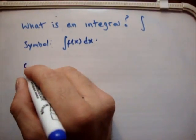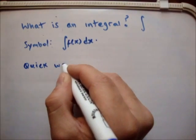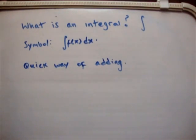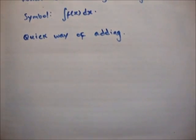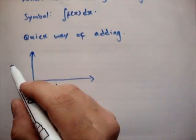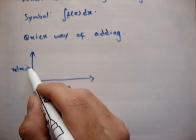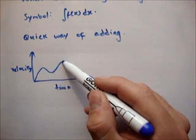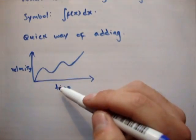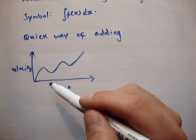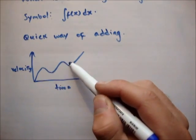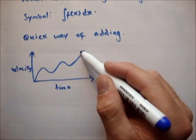An integral is a quick way of adding. For example, let's say we have a graph — anybody doing applied maths might be familiar with this sort of graph. On your graph you might have time and velocity, and say you had a curve that went like that. This is graphing the velocity of your car against time. When you start moving, your velocity is at zero, and as you put the accelerator down your velocity speeds up, then slows down and speeds up again.